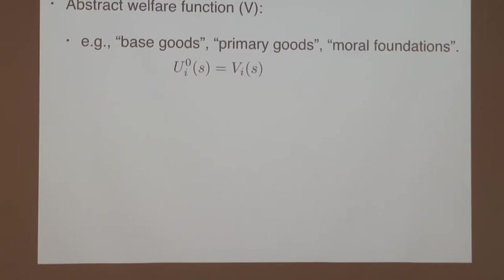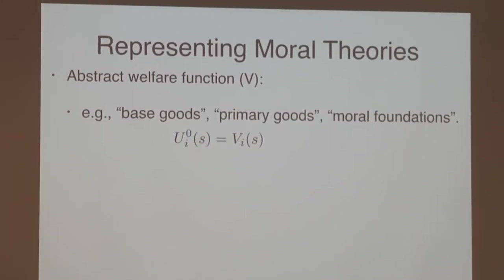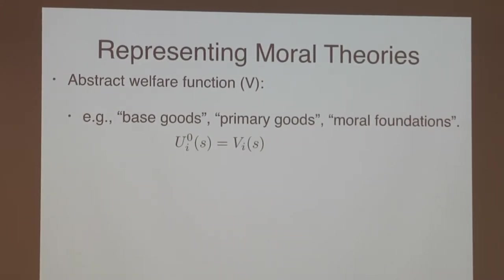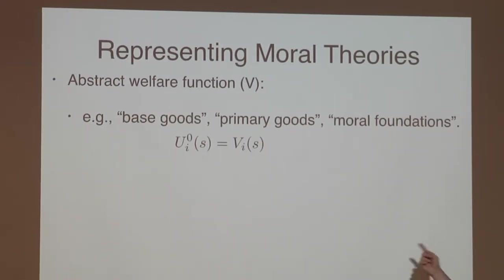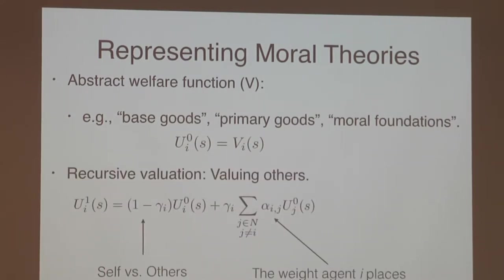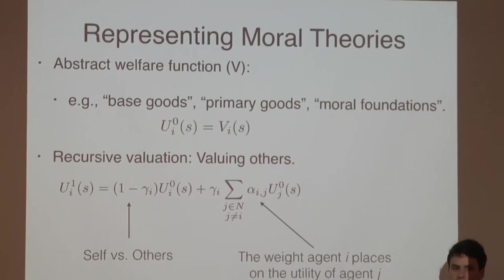I start with a basic notion of how we might think about representing a moral theory, drawing on work by philosophers such as Rawls and Harsanyi, who talked about basic goods — primary goods, moral foundations. These could be the primitive things of morality, like welfare. The idea is to abstract over what it means for a quantity to be moral. The most basic morality you could have says that agent i gets value from itself — the only thing it cares about is the value it gets from itself.